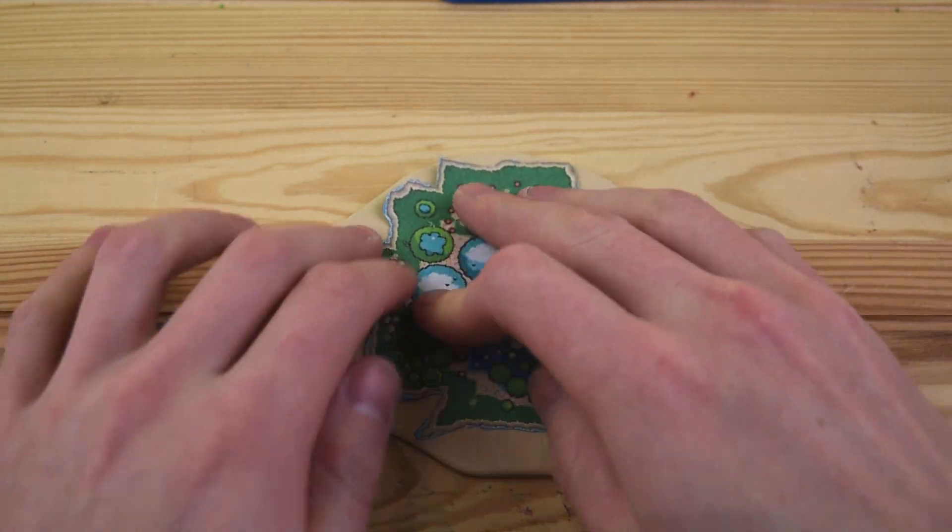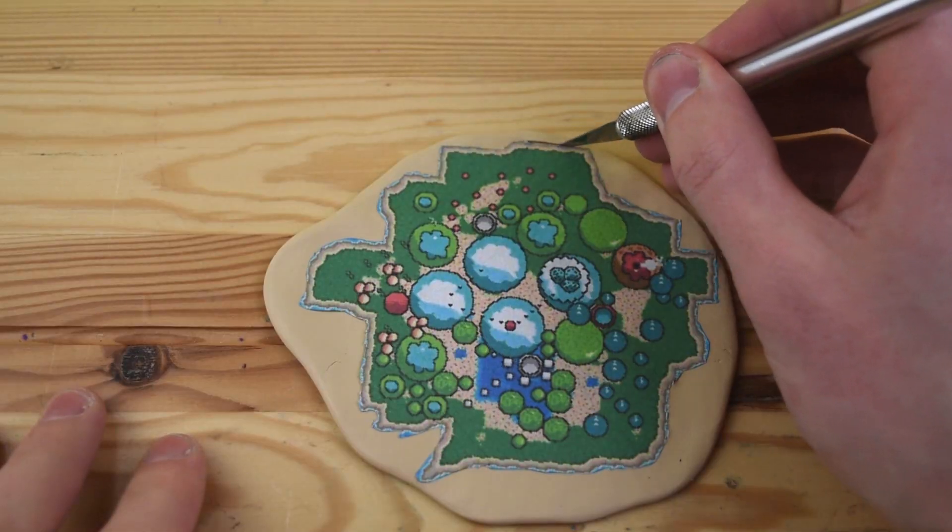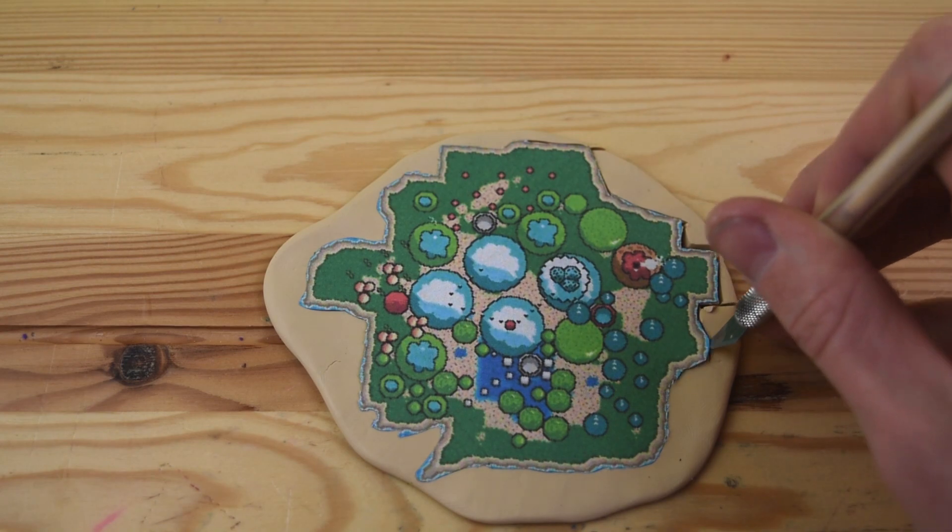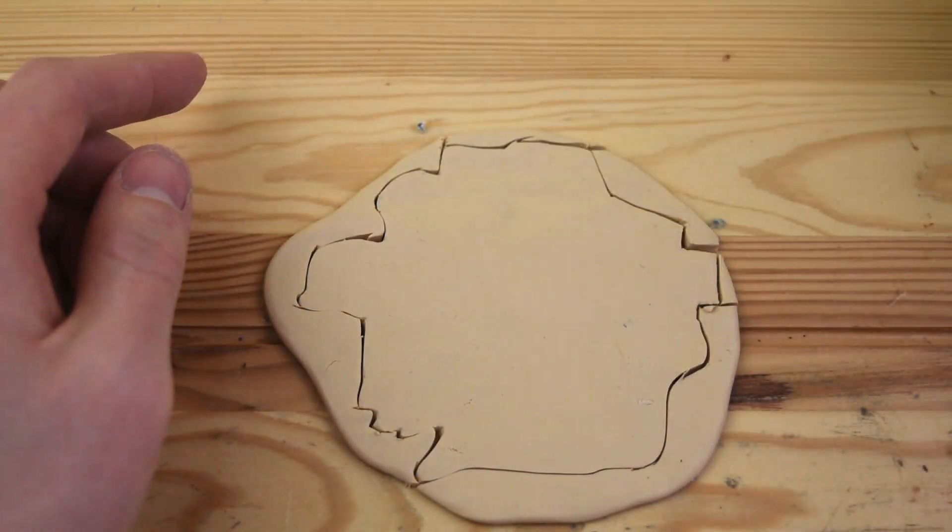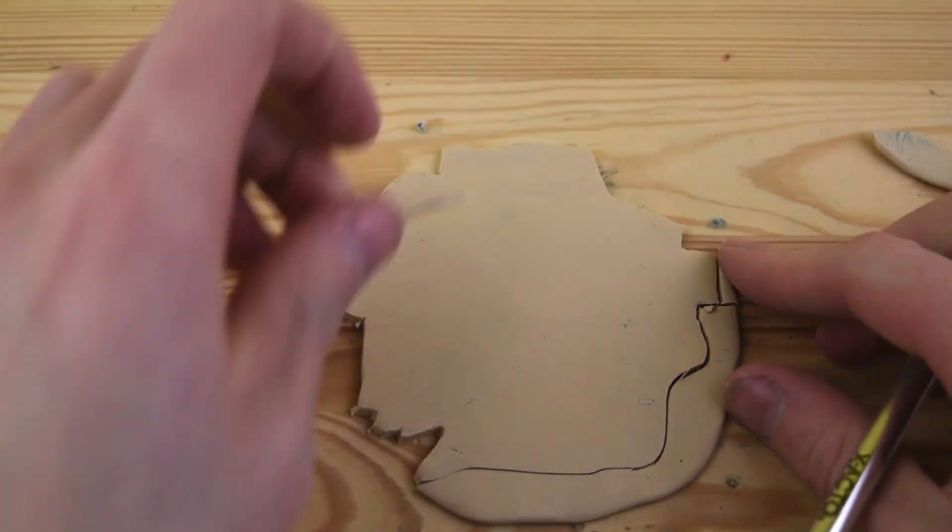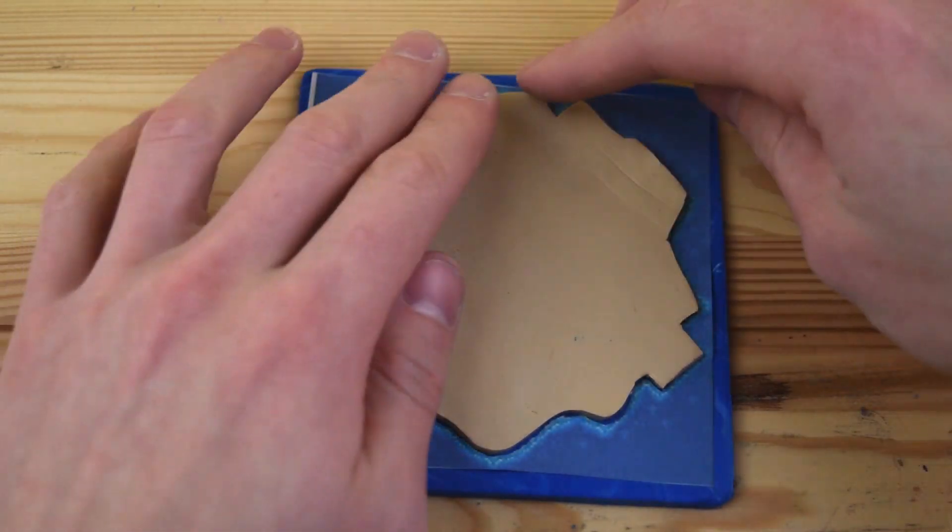If you're interested in making this map for yourself, I will leave a link in the description for this map printout that I used. With this tan clay here, we are creating the main piece of the island. After we remove the excess clay, we can put this onto our water.